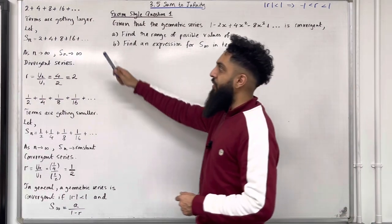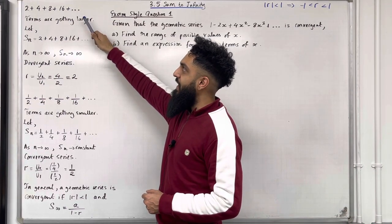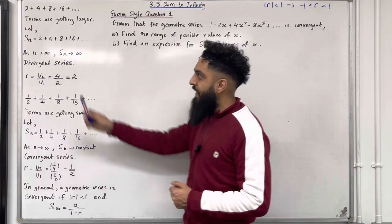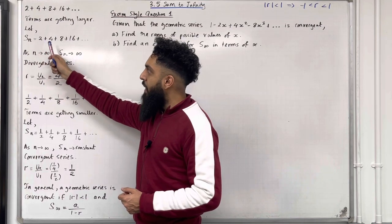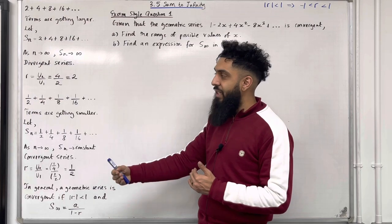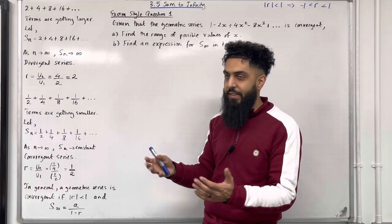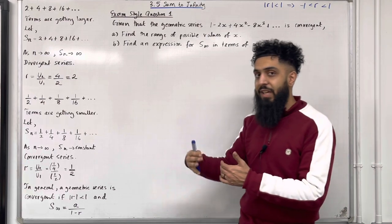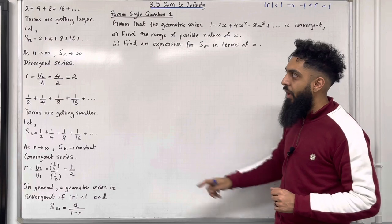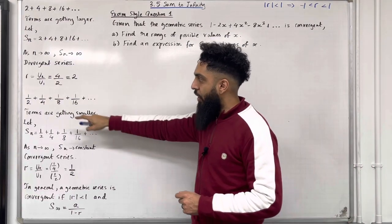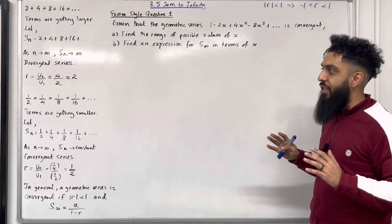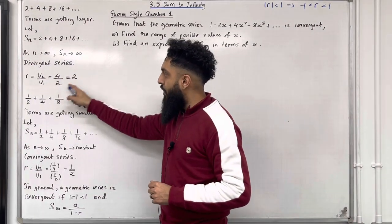Consider the following geometric series: 2 + 4 + 8 + 16 + ... We can see that the terms are getting larger. Let Sn, the sum of the first n terms, equal 2 + 4 + 8 + 16 + ... As n tends to infinity, Sn tends to infinity, because the terms are getting larger. Hence the sum will tend to infinity. We call this a divergent series. The common ratio R is calculated by taking the second term divided by the first term: 4 divided by 2, which is 2.